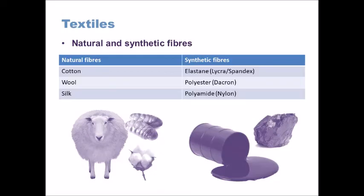Regenerated fibres are kind of somewhere in between. Things like viscose effectively have a natural source — a cellulose which is taken from a plant, or in some cases wood — and these are broken down with chemicals to get the natural fibres out, which are then spun into different types of yarns.